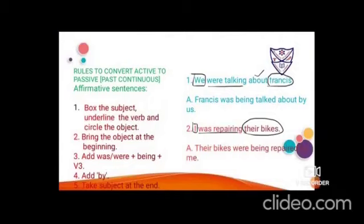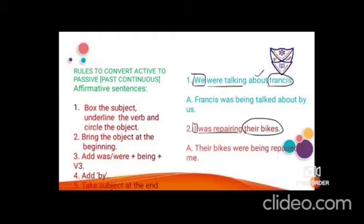Rules to convert active to passive, affirmative past continuous: Step 1 — box the subject, underline the verb, circle the object. Step 2 — bring the object to the beginning. Step 3 — add 'was' or 'were'. Step 4 — add 'being' then the verb in its third form. Step 5 — add 'by', then take the subject to the end. Example: 'We were talking about Francis.'